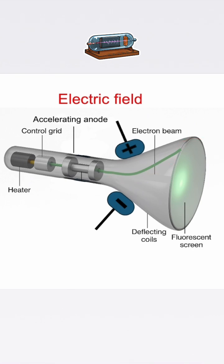The amount of bending also showed these particles were extremely light. Finally, Thompson compared how much the beam bent under electric and magnetic forces. By adjusting both fields until the beam went straight again, he could calculate the charge-to-mass ratio. The value was far higher than hydrogen, meaning the particles were thousands of times smaller than atoms.